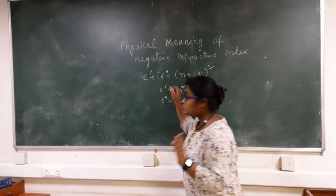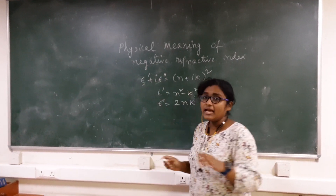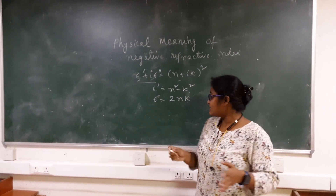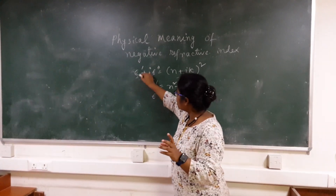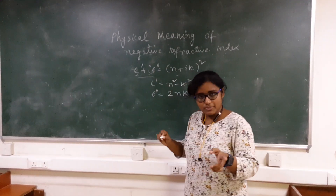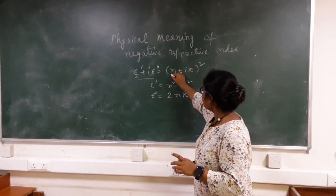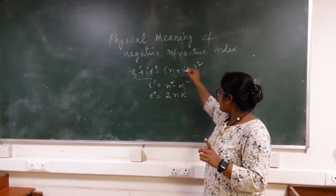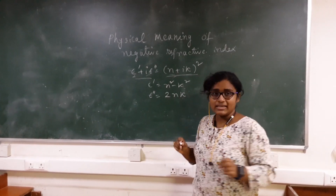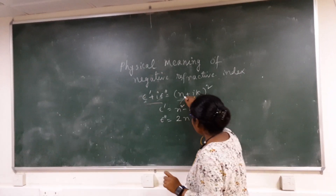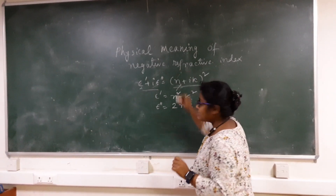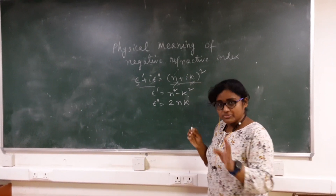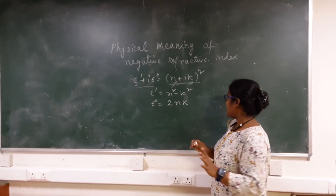Refractive index has two parts: one is the real part and another is the imaginary part. The dielectric function can be written as having a real part and an imaginary part, and this equals the refractive index squared. So refractive index is written as (n + ik)², where n is the real part of the refractive index — it gives us the reflection part — and k is the absorption part, denoting the imaginary part of the refractive index.